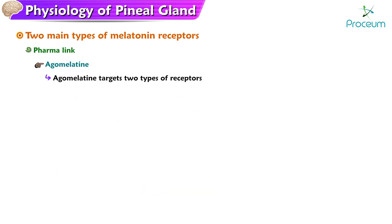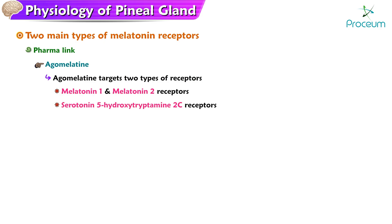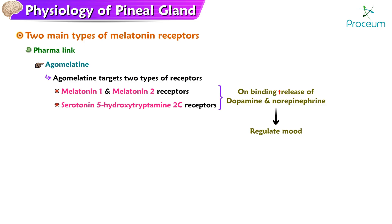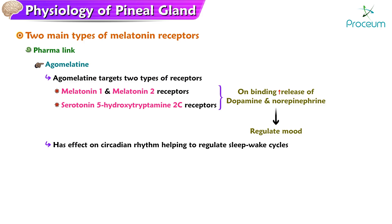Agomelatine targets two types of receptors in the brain: MT1 and MT2 melatonin receptors, and serotonin 5-hydroxytryptamine-2C (5-HT2C) receptors. By binding to these receptors, agomelatine increases the release of dopamine and norepinephrine, two neurotransmitters important for regulating mood. Agomelatine also has an effect on the circadian rhythm, helping to regulate sleep-wake cycles, and is used to treat major depressive disorders.